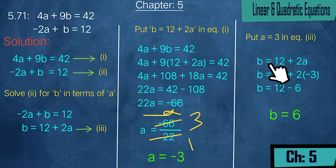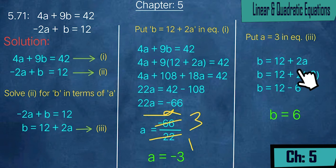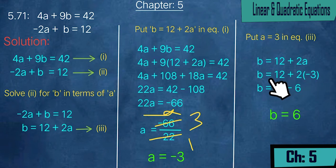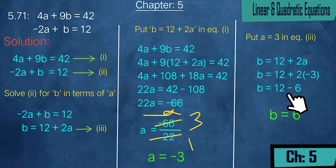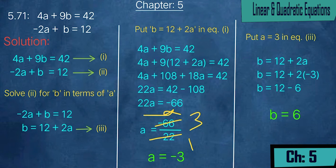So a = -3 and b = 6. These are the two values we needed to find using the substitution method.